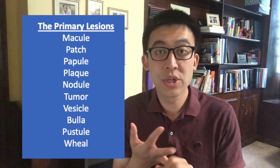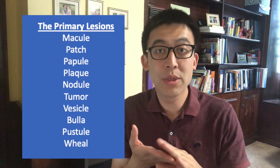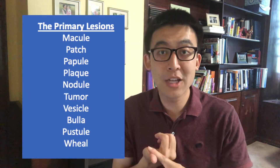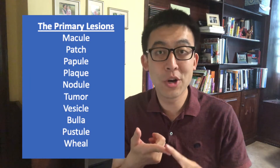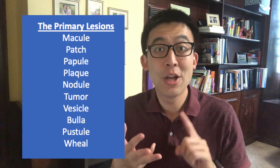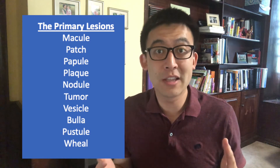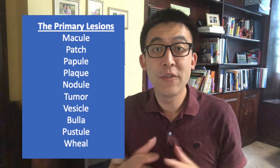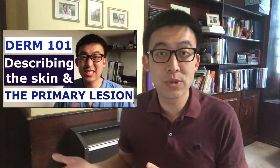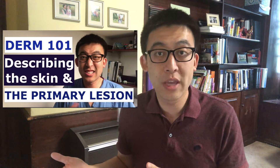As a reminder, the primary lesions we talked about were the macule, the patch, the papule, the plaque, the nodule, the tumor, the vesicle, the bulla, the pustule, and finally the wheal. If you need a review, that video is always there for you.